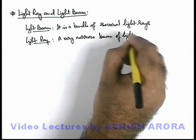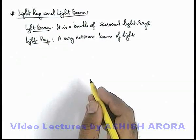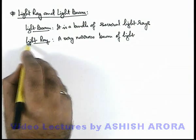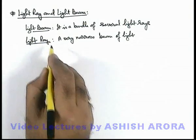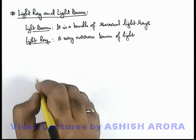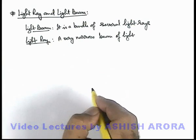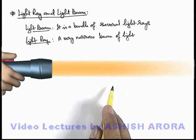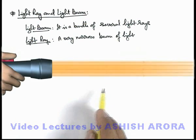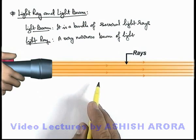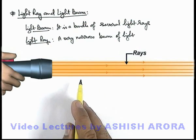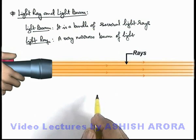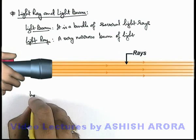Here you might be getting confused how two things are defined in terms of each other, but this is the way how we understand a light ray, because this is the only theoretical phenomenon by which we can analyze the behavior of light in rectilinear propagation. If we just have a look at this situation, this is a source of light which produces a light beam, and a light beam is composed of several light rays, which are very narrow light beams composing this beam. This light beam can be considered as a bundle of these light rays.